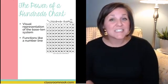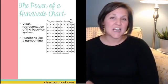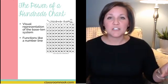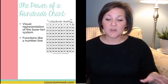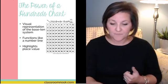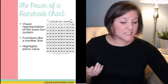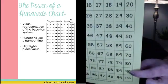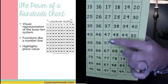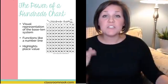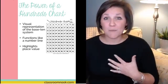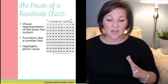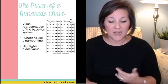It also functions like a number line. A lot of students, especially when they get into skills like rounding, have a difficult time picturing numbers as they relate to each other. So it's a really great number line for one through 100. It also highlights place value — students can see that all of the numbers in this row have zeros in their ones place, the nines, the eights, and so on. Even some of my fourth graders had a difficult time visualizing place value, and it's a great visual for that.